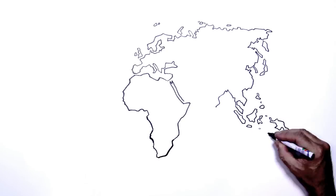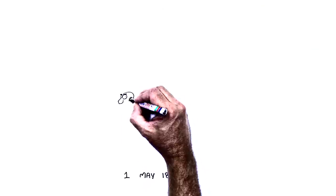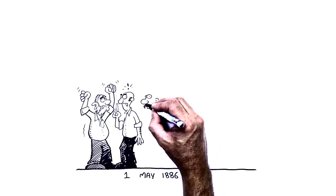On the 1st of May, 1886, workers in Chicago went on a general strike to limit the working day to eight hours.